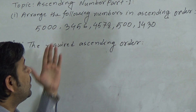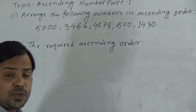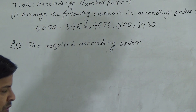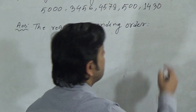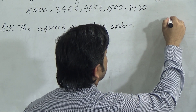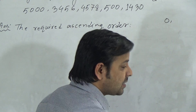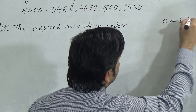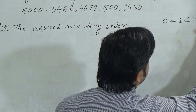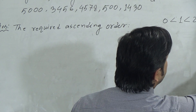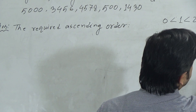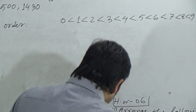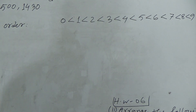To arrange the numbers from smaller to larger, we need to know which digits are smaller. We know: 0 is smaller than 1, 1 is smaller than 2, 2 is smaller than 3, 3 is smaller than 4, 4 is smaller than 5, 5 is smaller than 6, 6 is smaller than 7, 7 is smaller than 8, and 8 is smaller than 9. We have to know these 10 digits.